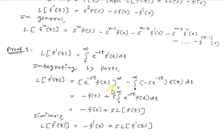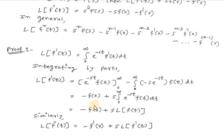For the lower limit, e^0 equals 1, multiplied by f(0), so the result is minus f(0). Then minus minus gives plus s times the integration from 0 to infinity of e^(-st)·f(t) dt, which is nothing but s·Laplace of f(t). So we have Laplace of f'(t) equals s·F(s) minus f(0).